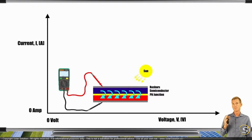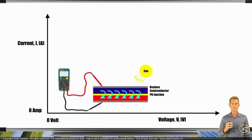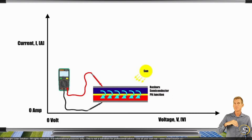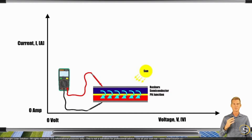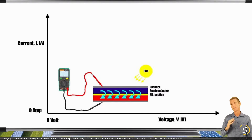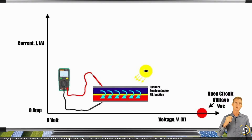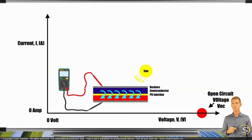Because the voltage is really high, it's all the way on the right-hand side of the graph. Because we have not created a circuit, it's an open circuit — no electricity is flowing, we're just measuring the voltage. This highest voltage, all the way to the right on the graph, is called the open circuit voltage. We use the term VOC — voltage open circuit.